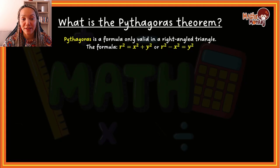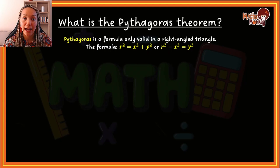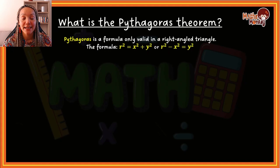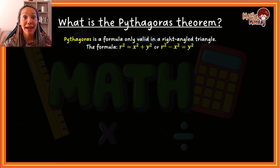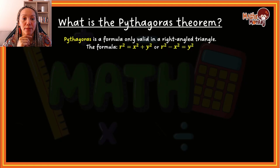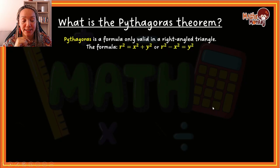Don't worry if this doesn't make sense yet. Pythagoras is the guy who figured out that in a right angle triangle this formula is valid, and in this video I'm going to show you how we can apply it. But before that, let's look at what r, x, and y actually stand for.